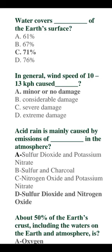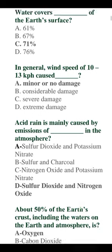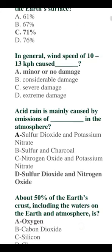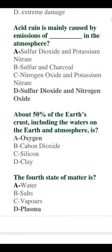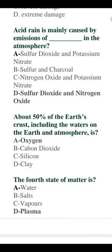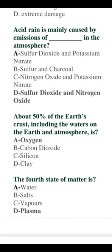Acid rain is mainly caused by the emission of sulphur dioxide and nitrogen oxide into the atmosphere. About 50% of the Earth's crust, including the waters on the surface, earth, and atmosphere, is oxygen. The fourth state of matter is plasma.